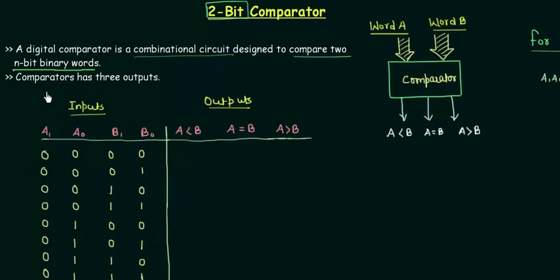The next thing is comparator has three outputs. You can see here there are three outputs and all the outputs are single bit. That's why I have shown it by a thin arrow.